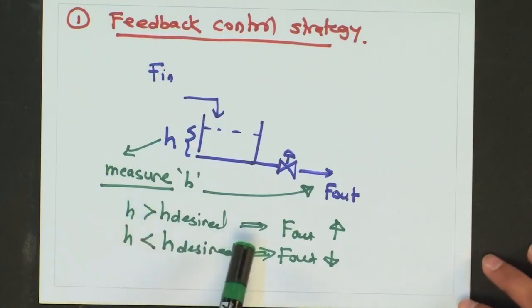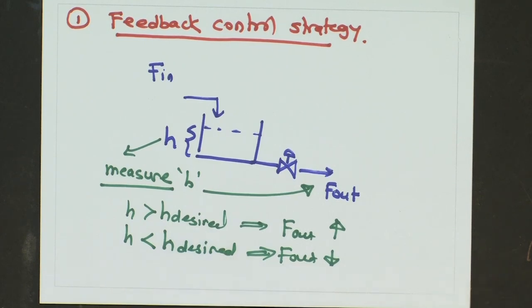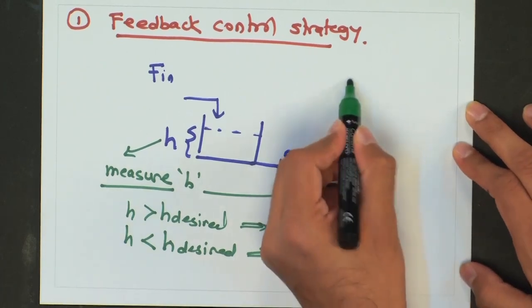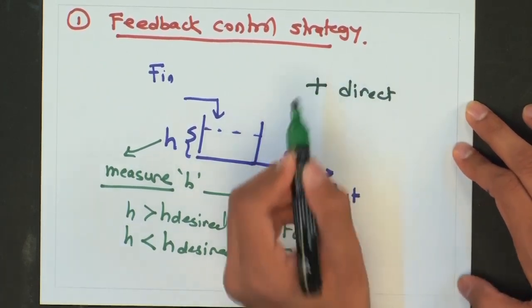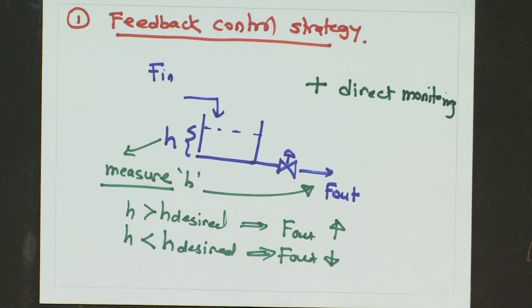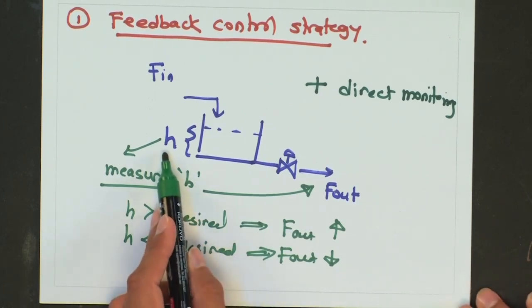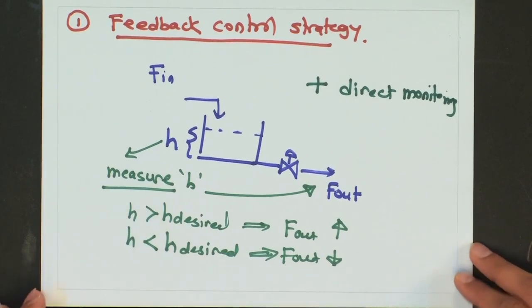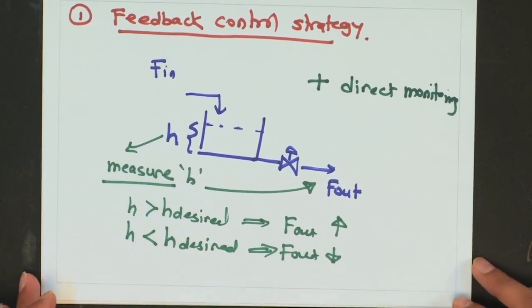Let us start with the feedback control strategy. We said that in the feedback control strategy we measure the controlled variable and take an action based on the feedback coming from the system. The main advantage of a feedback control strategy is that you have direct monitoring of the controlled variable. You will always have the value of the controlled variable and you would know whether it is getting controlled or not.